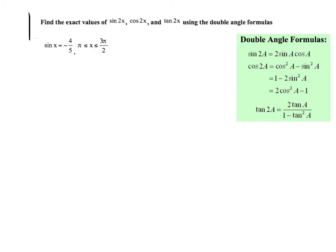What will a question look like that implies a double angle? It says: find the exact value — and when we say exact value, we mean no calculator. We want the exact value of sine of 2x, cosine of 2x, and tangent of 2x. How do you know it's a double angle? You're taking angle x and multiplying it by two — that's the big hint that it's a double angle.